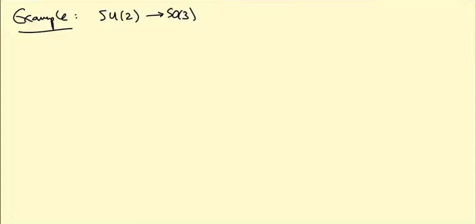I want to talk about a really nice example of a Lie group homomorphism, which is one that goes from the group SU(2) of special unitary 2×2 matrices to the group SO(3) of special orthogonal 3×3 matrices — that is, rotations of R³. But first I need to tell you what SU(2) is.